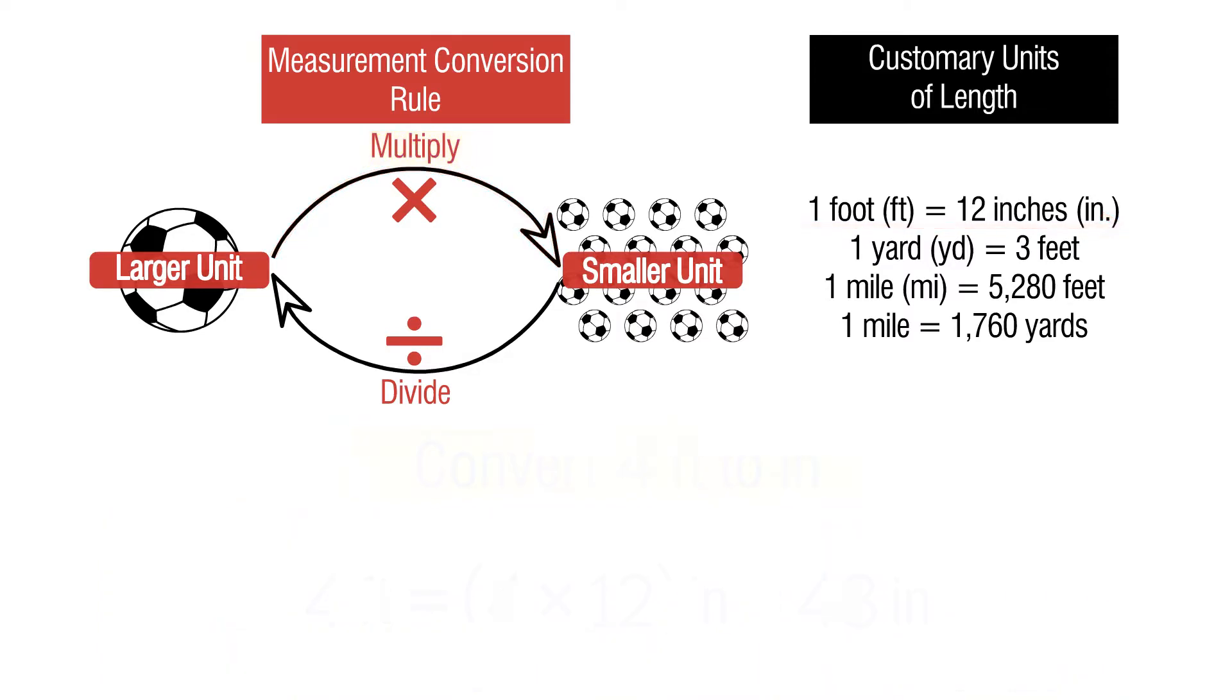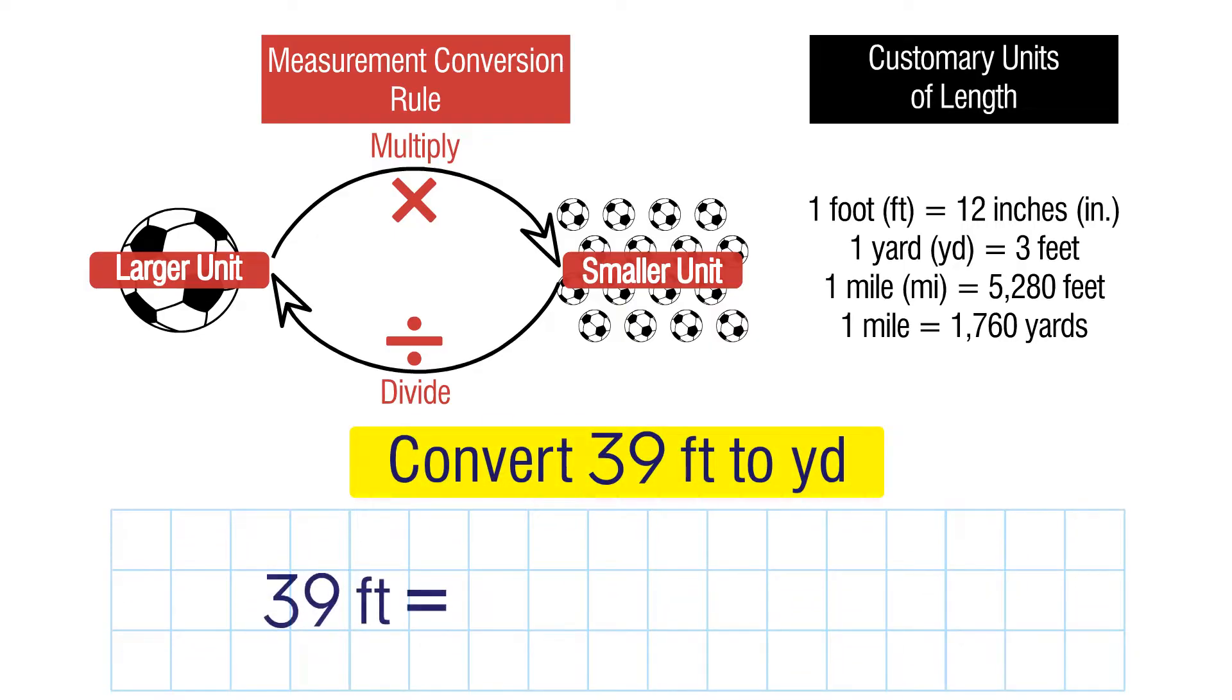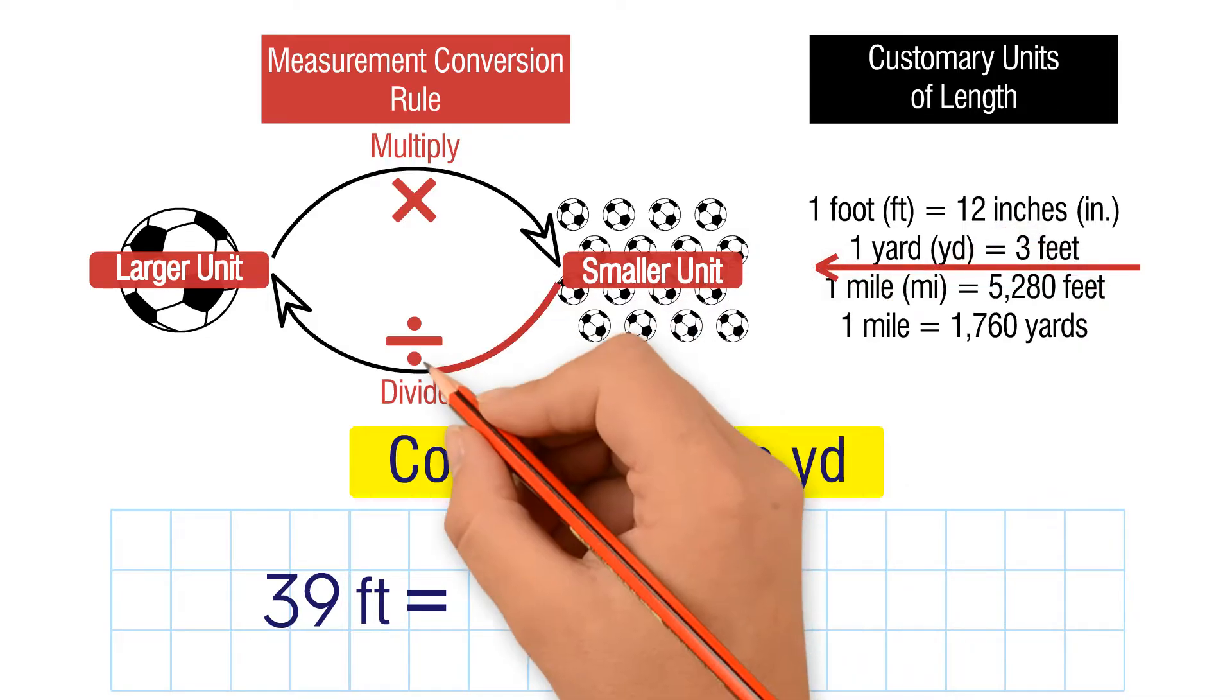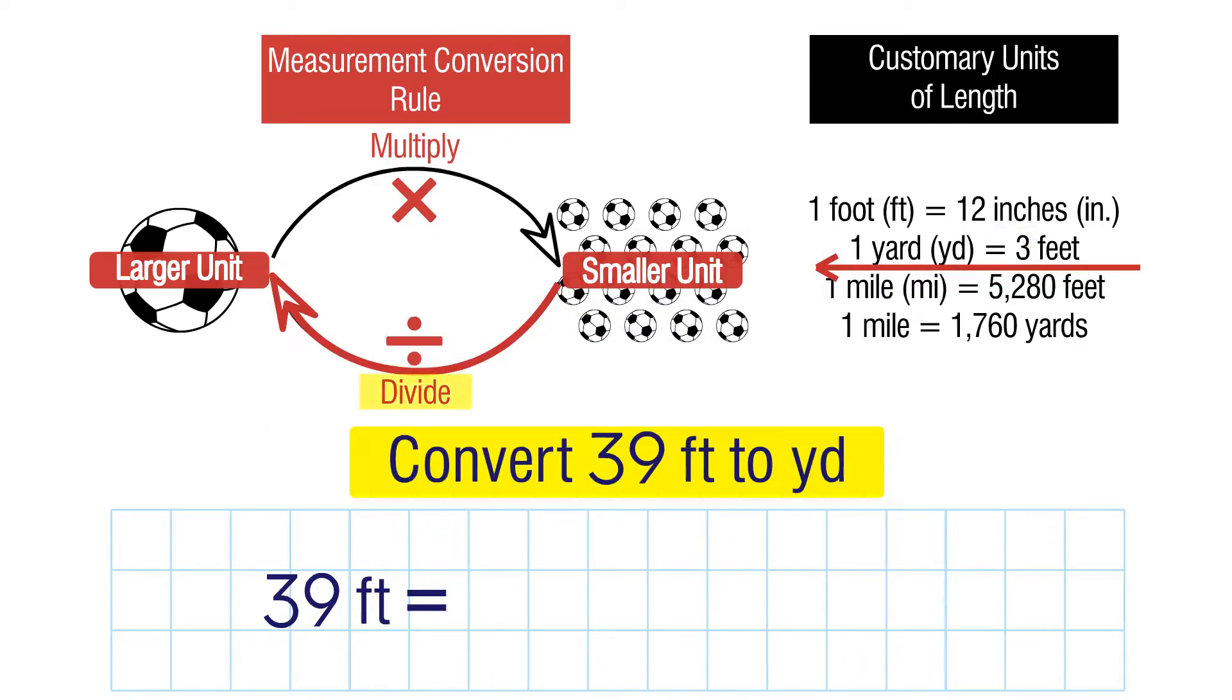Let's do another one. Convert 39 feet to yards. We're going from smaller units to larger units, so we need to divide. There are 3 feet in 1 yard, so we divide 39 by 3 to get 13 yards.